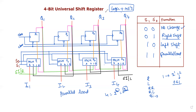For the shift register sequence we need flip-flops D1, D2, D3, and D4. These flip-flops have inputs and outputs: Q1, Q2, Q3, and Q4 respectively.